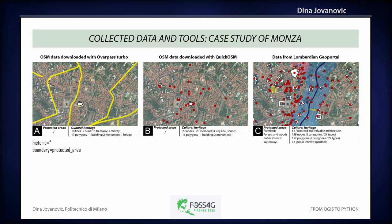We had a very simple test. We had students working online and we tested different open data from various OSM sources and also from the GeoPortal of Lombardy. The students realized that downloading data through QGIS or through Overpass Turbo gave different types of data — sometimes lines, sometimes polygons, with different metadata. The official administrative data from the GeoPortal of Lombardy was the most accurate.